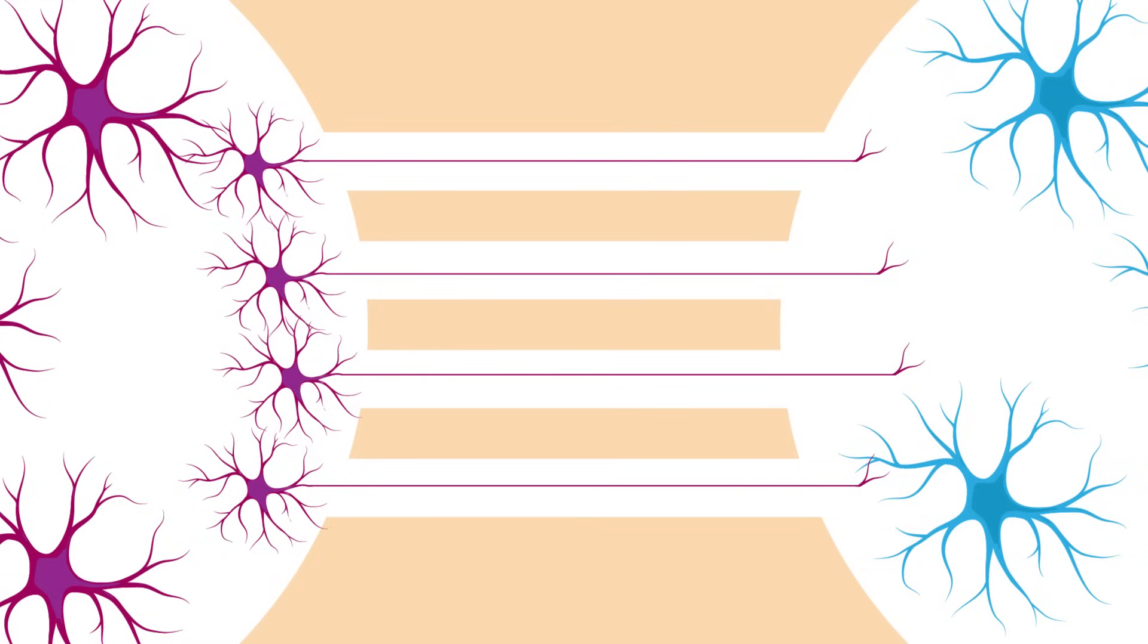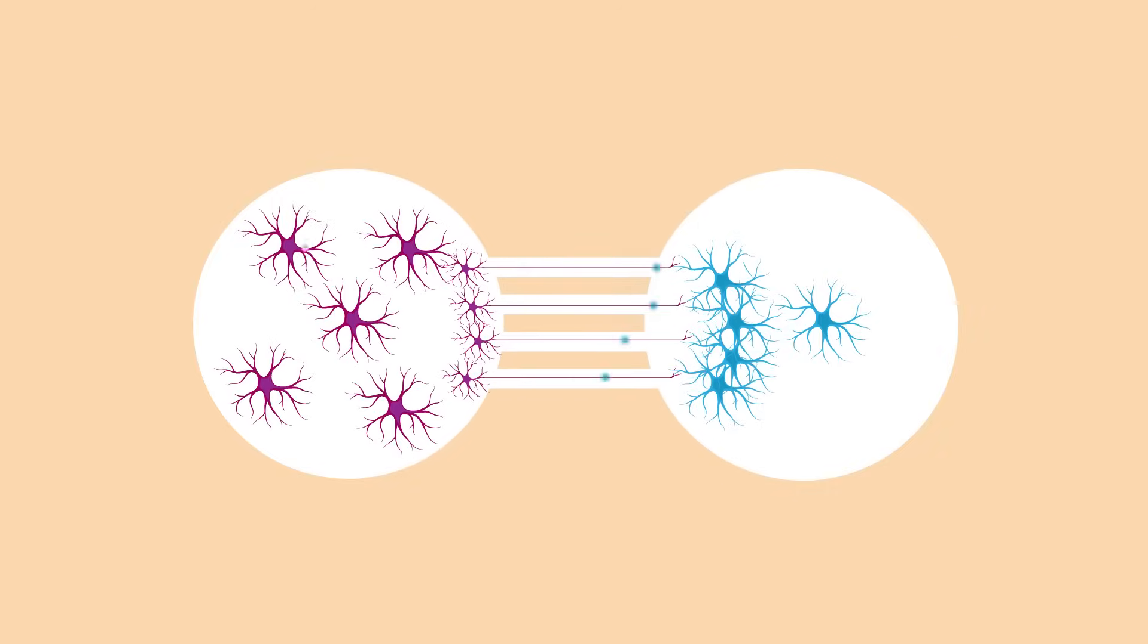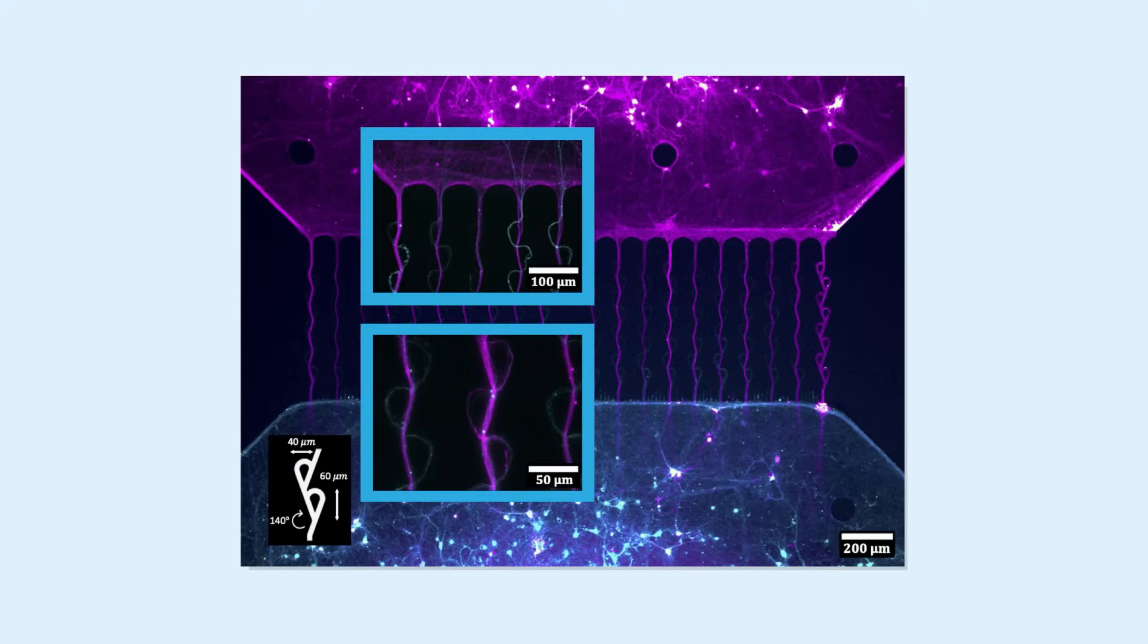Within this setup, the two neuronal groups can talk to each other from separate chambers through their branching neurites. By implementing specific shapes within the microchannels, the researchers could engineer a directional flow of information between the two groups of neurons.